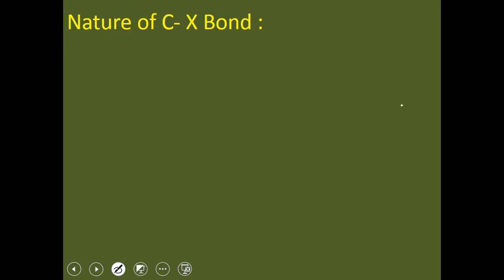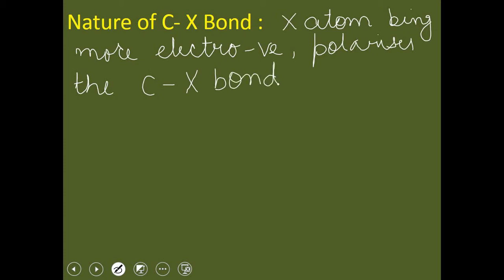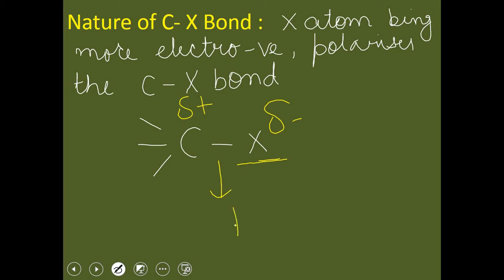Now we will see the nature of the C–X bond. In the case of haloalkanes, the halogen atom is more electronegative, so it withdraws the electron pair of the C–X bond towards itself. As a result, halogen acquires a partial negative charge (δ−) and the carbon acquires a partial positive charge (δ+). Because of the higher electronegativity of the halogen atom, the C–X bond becomes polarized.